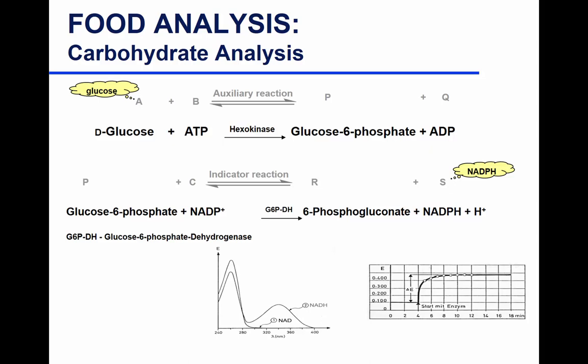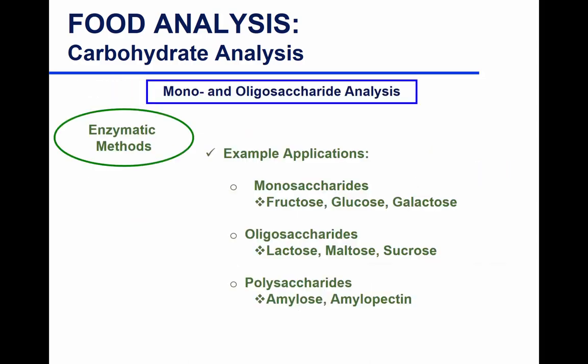The product of the second reaction — NADPH — is what we measure. To determine glucose in your sample, you need a standard curve using glucose standards to get the equation and determine the actual amount in your sample. Enzyme assay applications include fructose, glucose, and galactose for monosaccharides; lactose, maltose, and sucrose for oligosaccharides/disaccharides; and polysaccharides like total starch, amylose, and amylopectin.